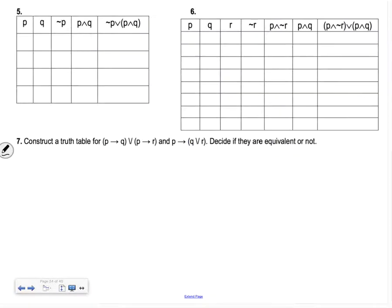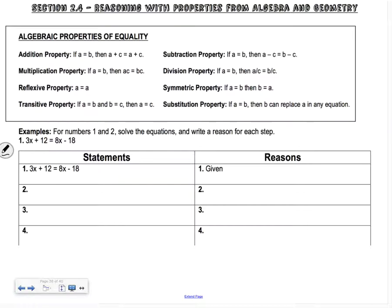Let's go to 2.4. It says reasoning with properties from algebra and geometry. The algebraic properties of equality that you used all the time in algebra are the addition, subtraction, multiplication, division properties of equality. Whatever you do to one side of the teeter-totter, if you add something and add something, you're using the addition property of equality. For every proof in geometry, the very first step is given. So free point on your test right there, given. Because why did we write down this first step? Because that was the problem that was given to us.